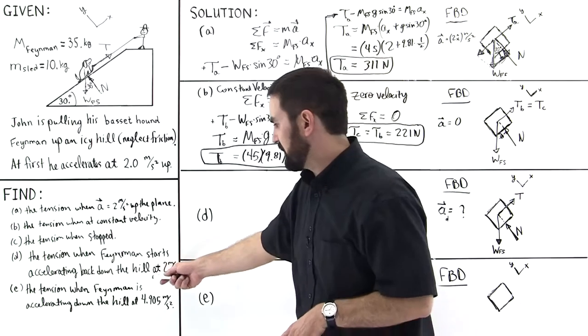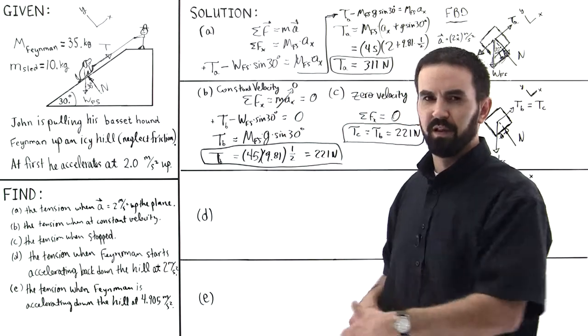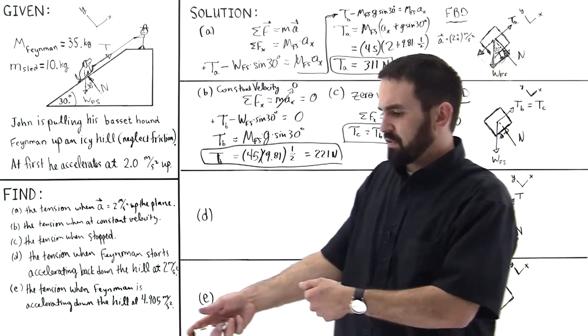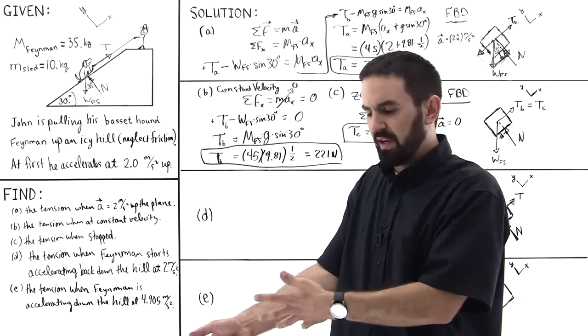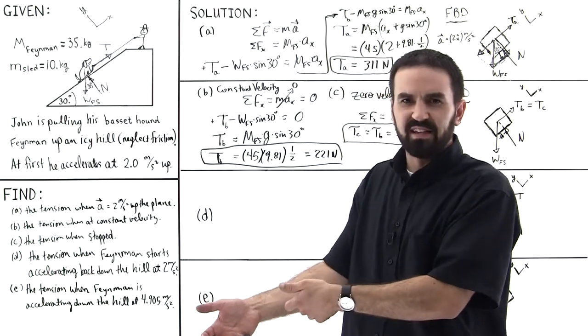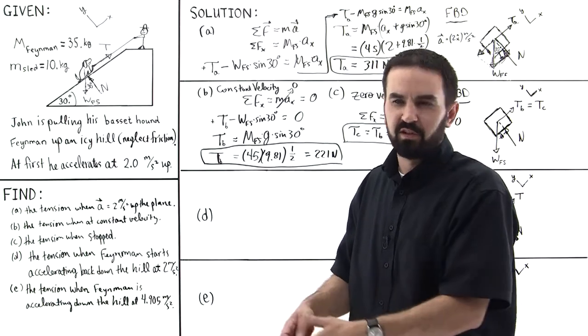And Feynman starts to accelerate down the hill at 2 meters per second squared to his peril. And so John is exerting a force on the rope due to that friction in between his hands and the rope, so let's find what that force is. That would be the tension force.